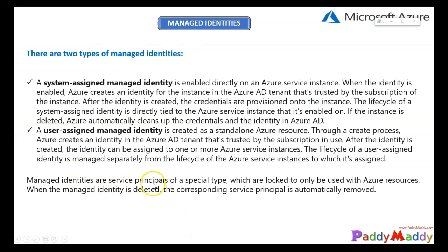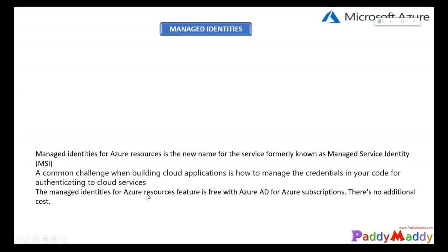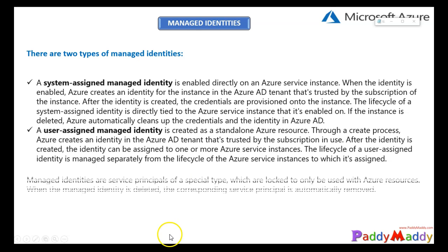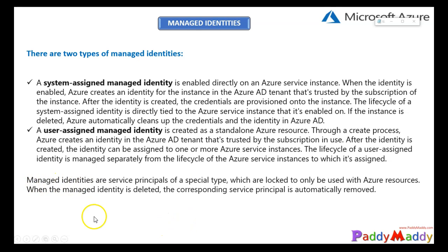Managed identities are service principals of a special type. So if you delete your resources in the backend, it also deletes the associated service principals — that's an important point to remember. The client ID is associated with the service principal, and similarly the principal ID is nothing but the service principal. All these key terms are associated with service principals. If you delete any managed identity, it also deletes the service principals accordingly — the lifecycle is completely dependent.